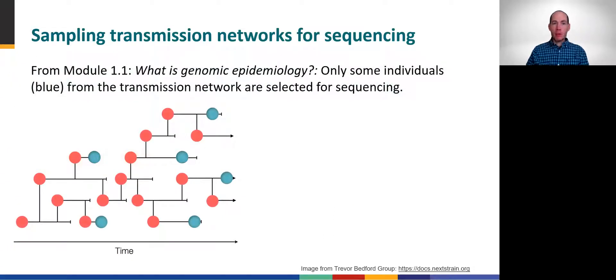In Module 1.1, we introduced this simple infectious disease transmission network example that you see here, from which only a few infected individuals in blue get sampled for genome sequencing, as is typically the case for epidemic processes like the spread of SARS-CoV-2.